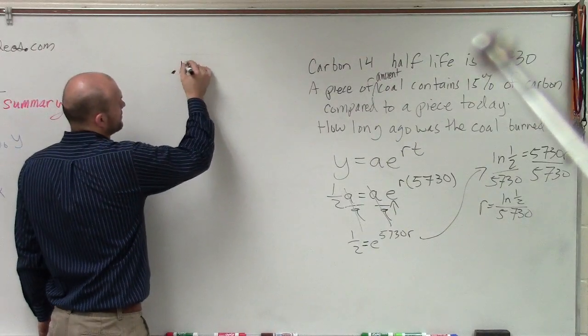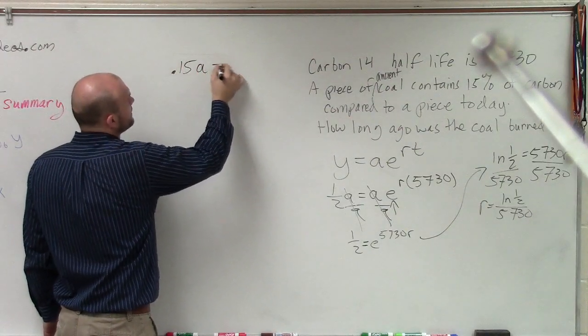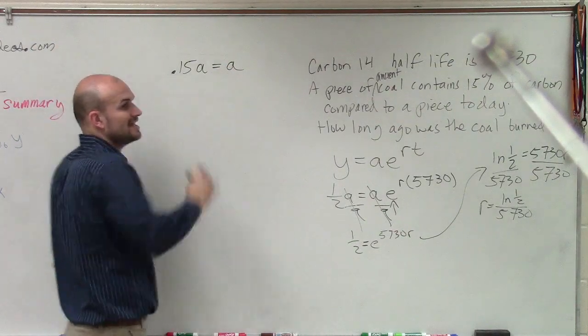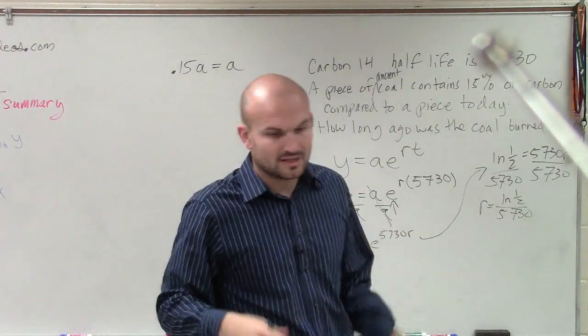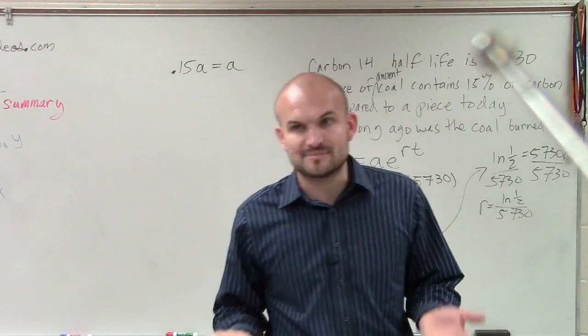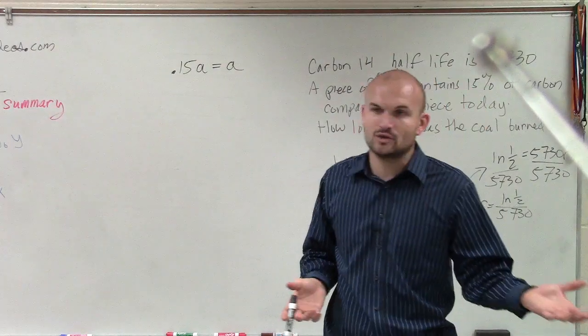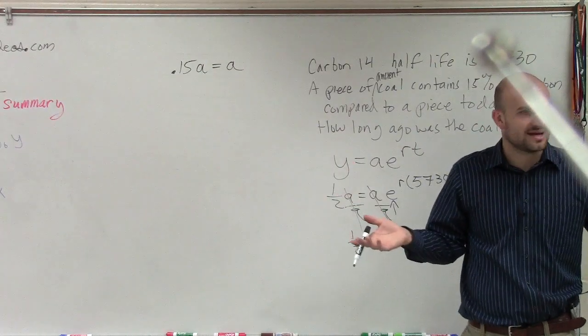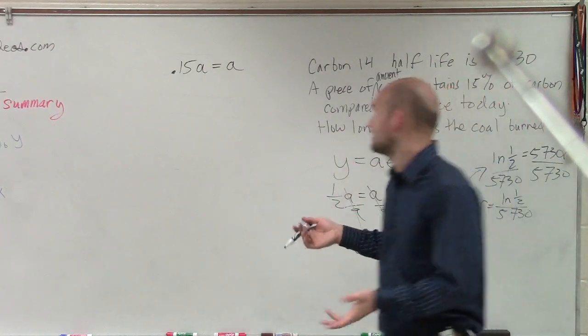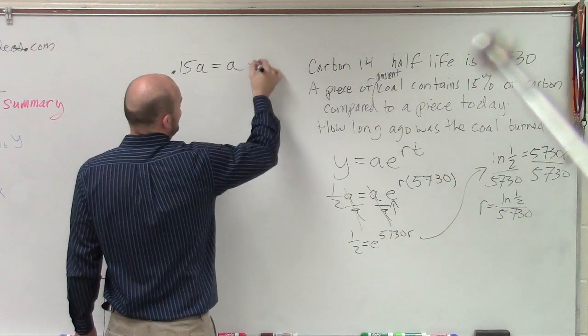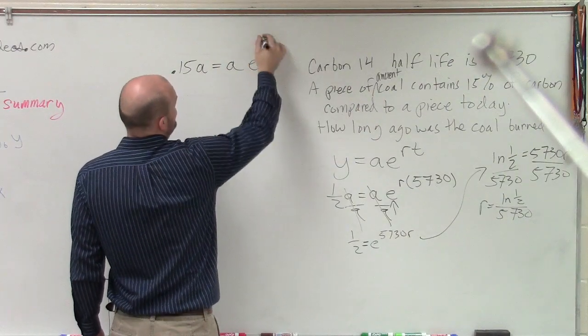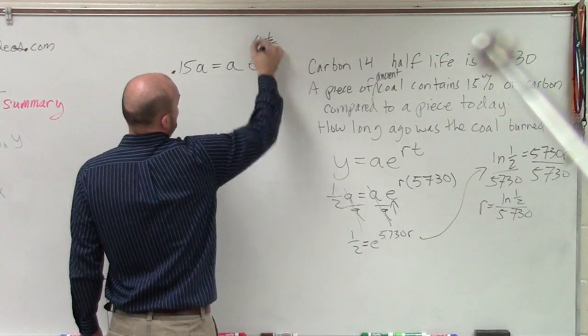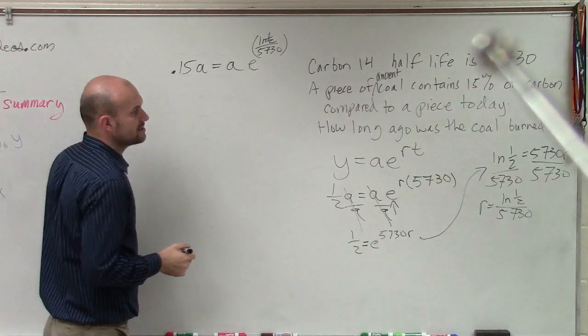So what I can write is 0.15A equals A, right? Because if here's a piece of carbon, let's say you have, let's say a one that you had today was 10 grams. Well, that ancient only has how much carbon? Well, it would be 0.15 times 10, right? So we're going to have E to the R, which is LN 1 half divided by 5,730 times, what are the years? We need to figure that out.